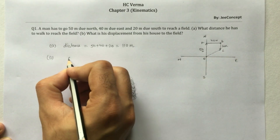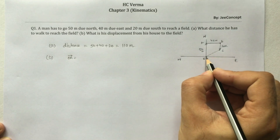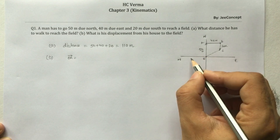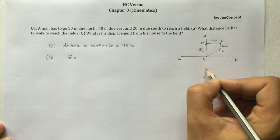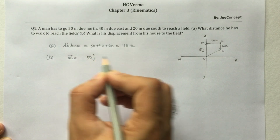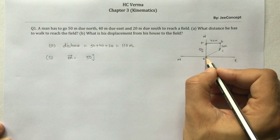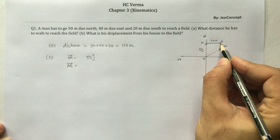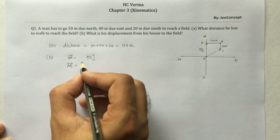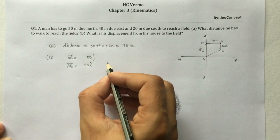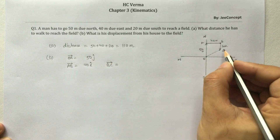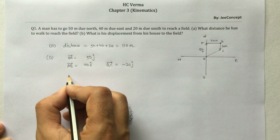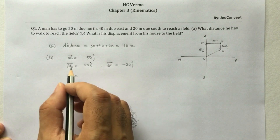For part B, I'll calculate each vector. OA vector: 50 meters in magnitude, directed north — comparing with coordinate axes, north is the y-direction, so OA = 50j. AB vector: 40 meters due east, along the x-axis, so AB = 40i. BC vector: 20 meters due south, which is the negative y-direction, so BC = -20j.